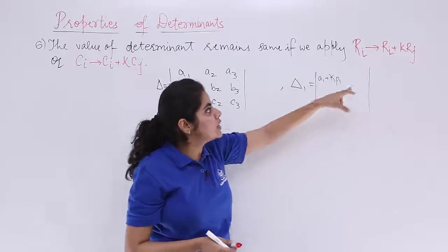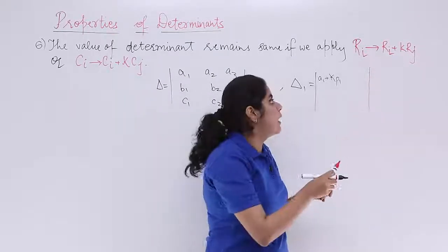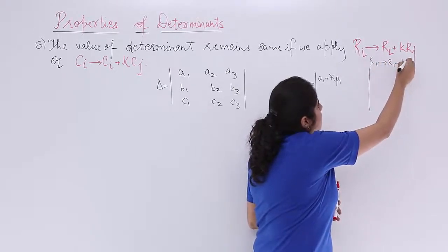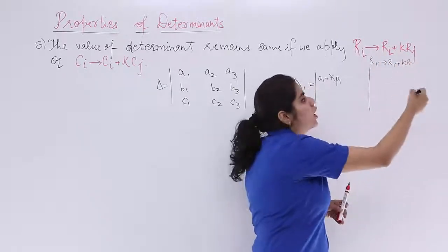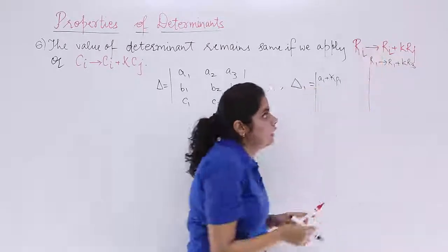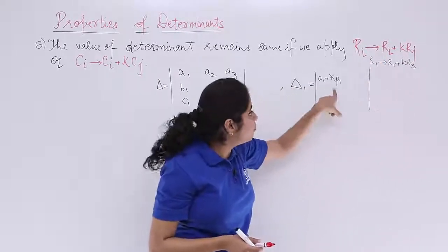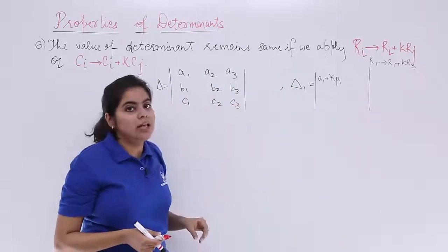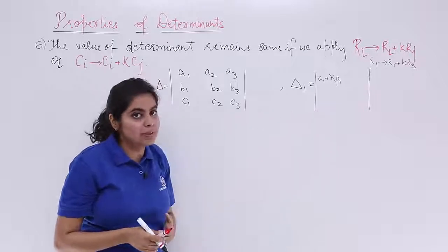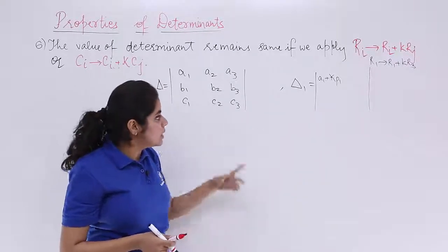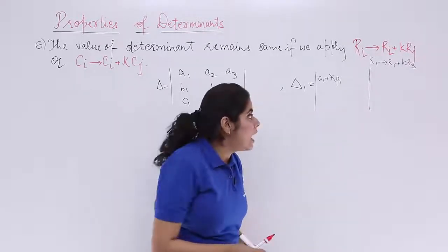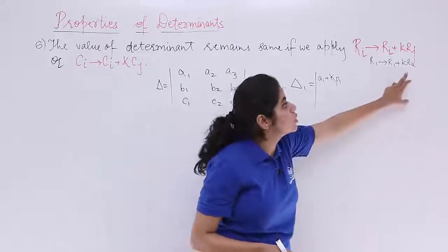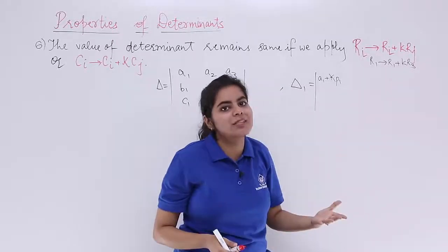Why? Because if you see the definition, it is Ri, means if you have R1, then it should be R1, then R1 plus k R2 or R3. So if I take 3, then it should be R3 and is p there in R? No, it is a, b, c. So you cannot take p. This is one mistake that usually people commit. So what we are going to do is, we are going to take a scalar that is k and apply this operation and we will see whether the answer remains same or not.